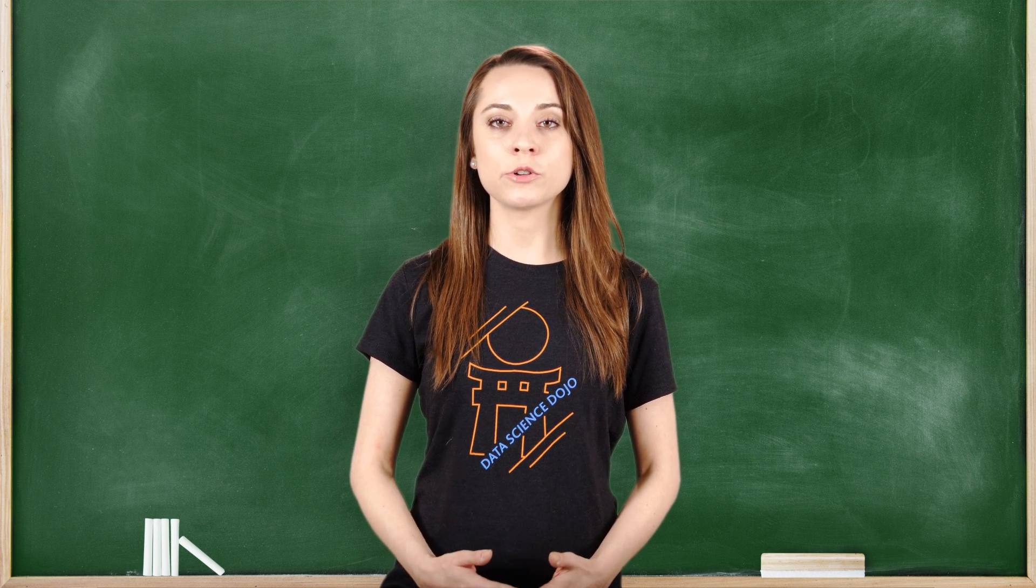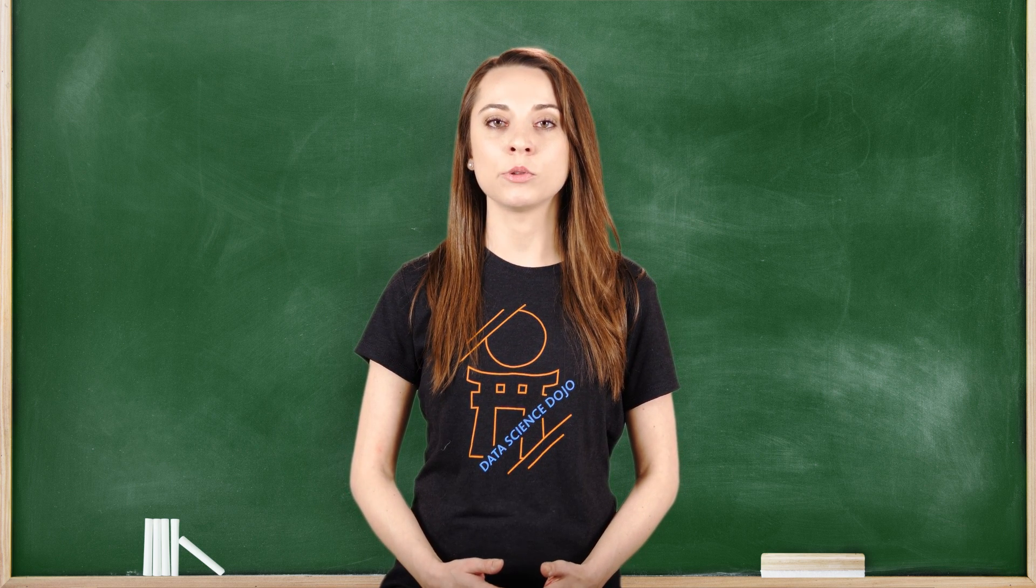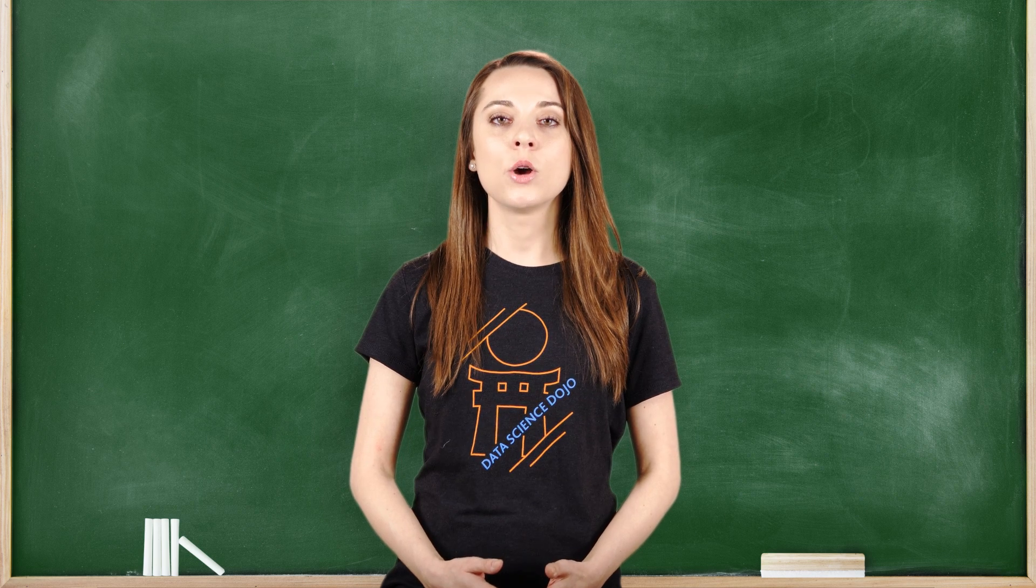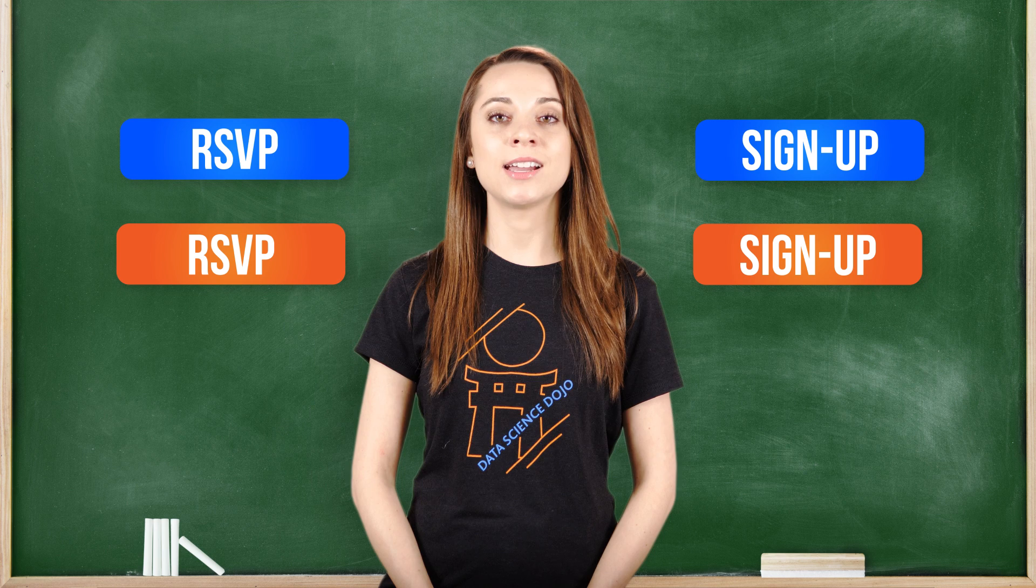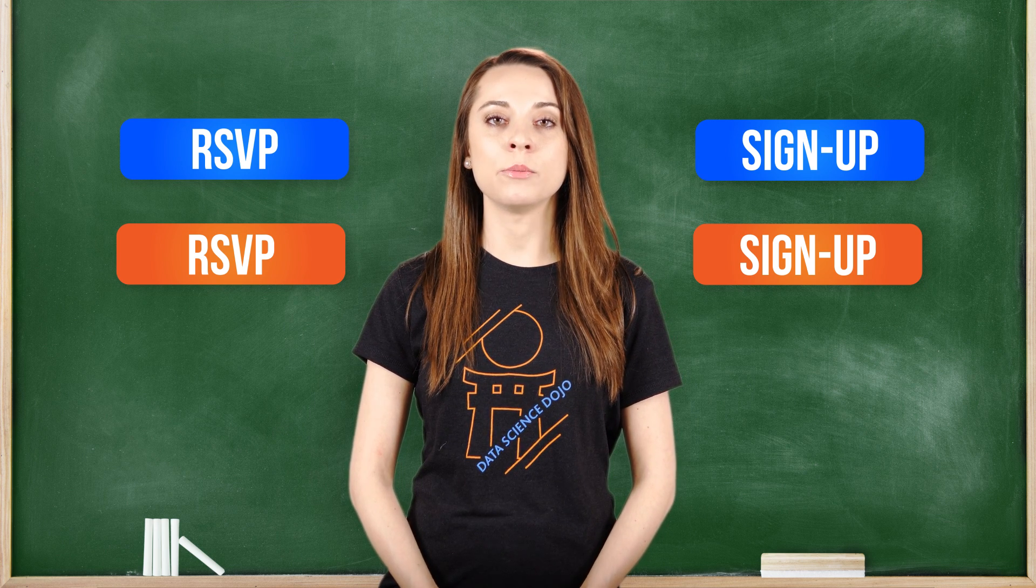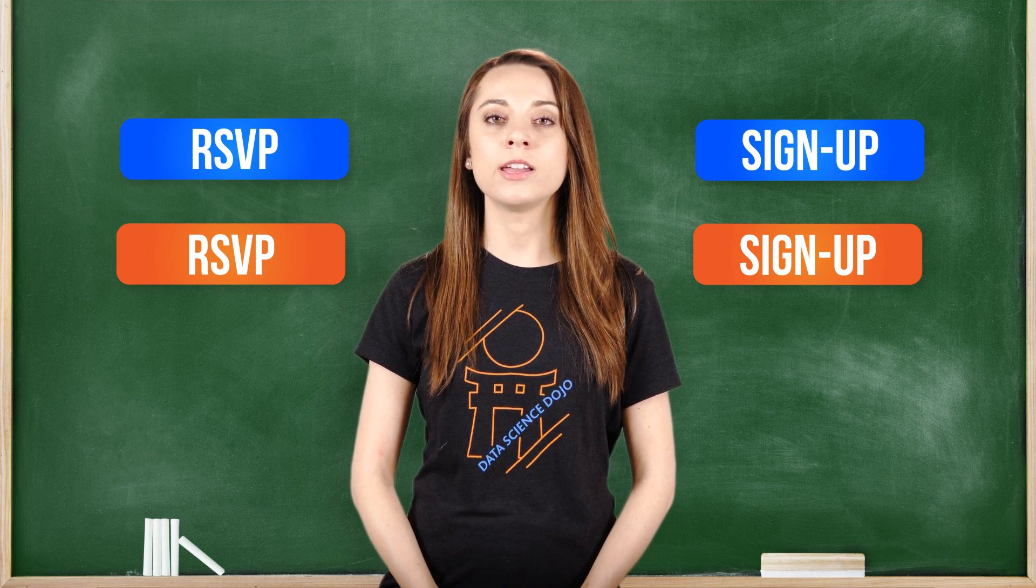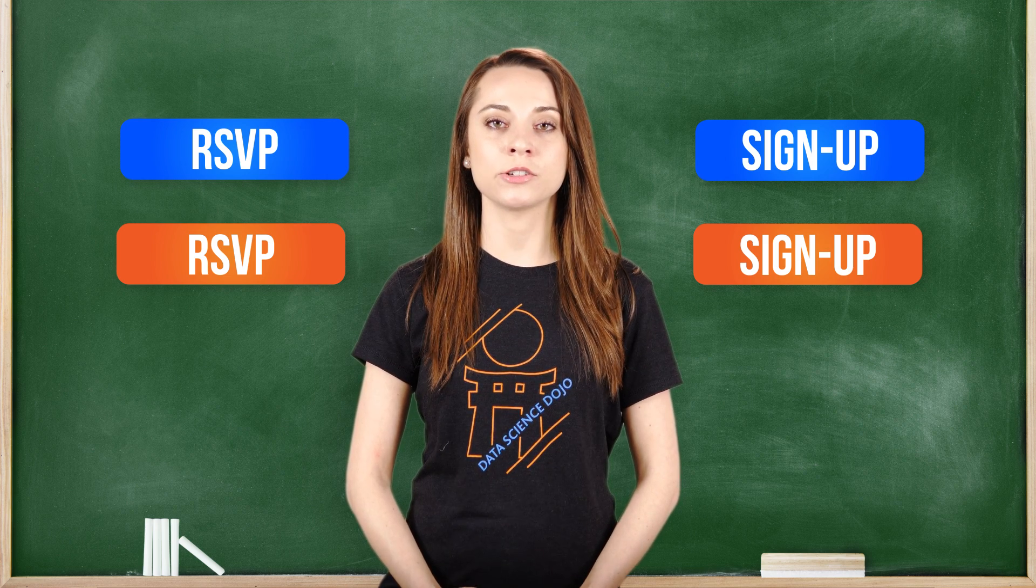You can do this with multiple versions, such as two buttons that are blue and two that are orange. One blue and one orange button say RSVP, and another blue and orange button say sign up. This would be called a multivariate test, or a full factorial test, since you are comparing different factors.